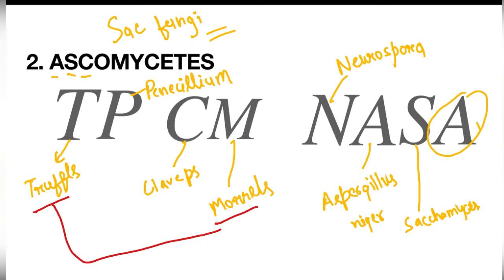Neurospora is also known as the Drosophila of the Plant Kingdom — it is very widely used in different types of lab work, and this is important for the NEET perspective. After watching this video, please do solve MCQs on the topic Fungi. Saccharomycetes is also known as common yeast.